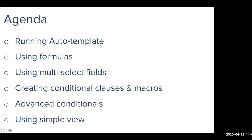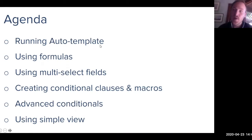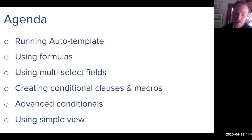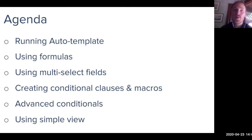We're going to run through auto template very briefly, just using it as a tool as it's meant to be used. We'll then walk through formulas and how to set up various use cases, do some multi-select fields, create conditional clauses using macros — which are placeholders for bringing in values from other fields — get advanced conditionals with input types, and finally walk through using simple view.